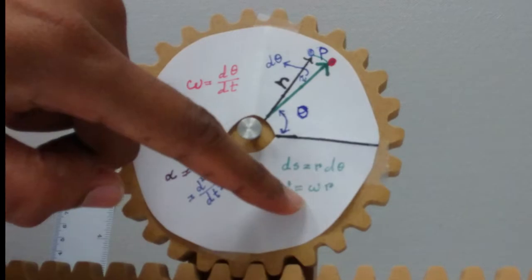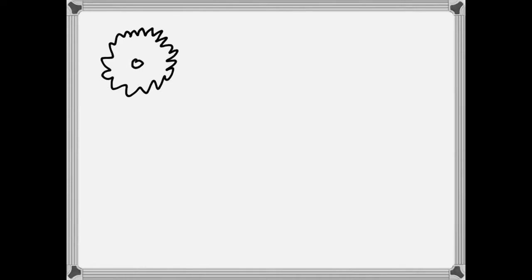Looking at the top view of the gear, with origin at center and point P rotating, we have derived that the velocity of particle P equals the angular velocity omega of the radial line r multiplied by the radius r. This establishes the relationship between the angular velocity of the radial line and the velocity of the point.